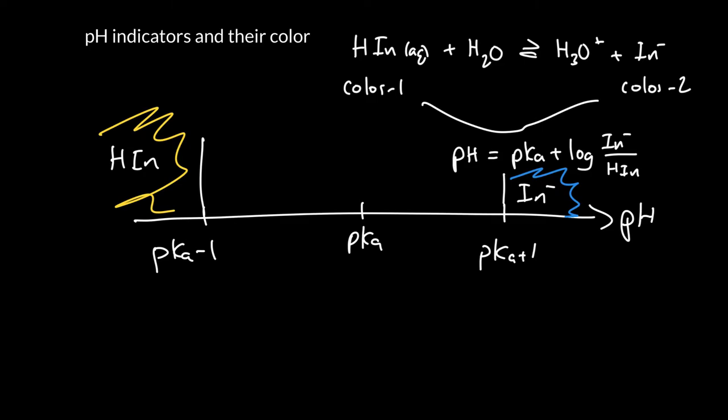So what we find is that every single indicator has a particular pKa that corresponds to roughly speaking the pH where it starts to transition from one color to the other. Let me go ahead and pull up a table from a book and show you.